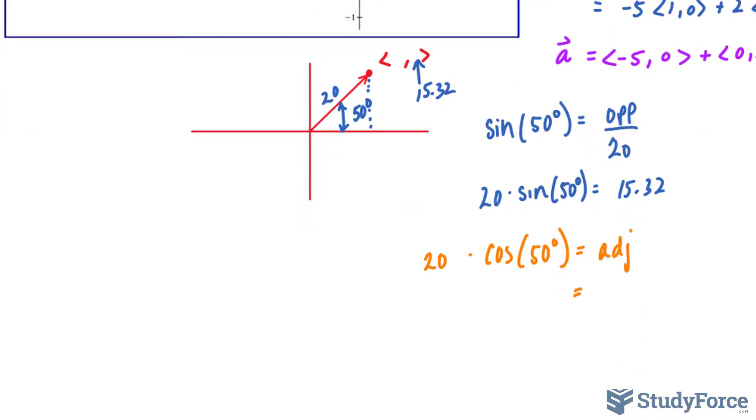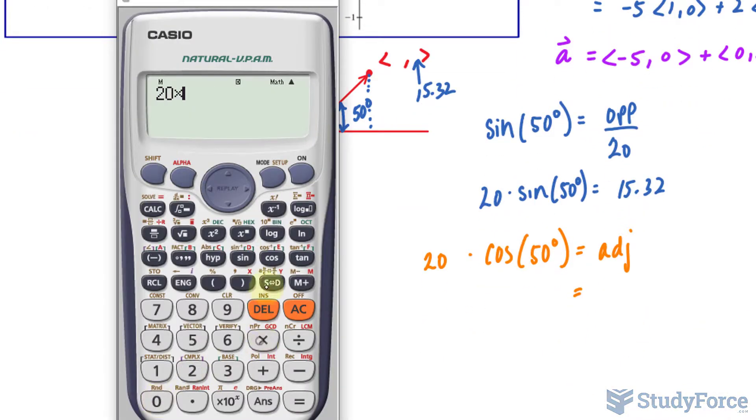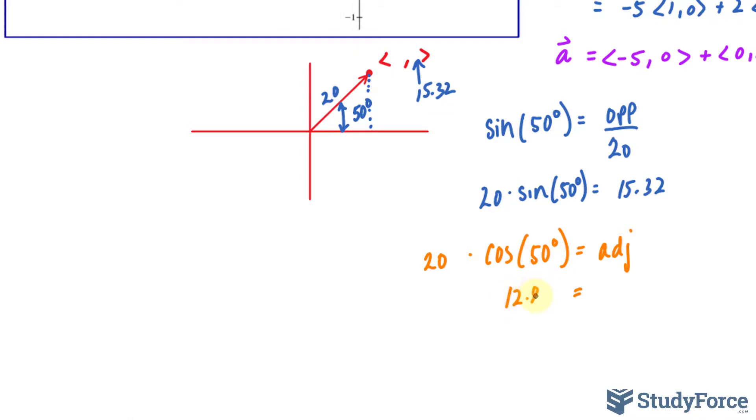Let's use our calculator once again. 20·cos(50°), we get 12.86. And that's the adjacent value. So this happens to be 12.86.